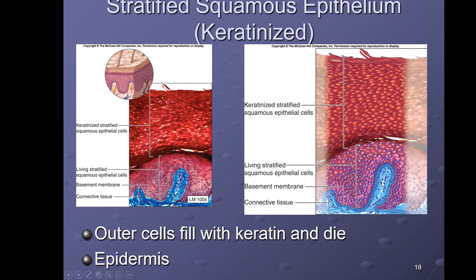To be more specific about location: it is specifically the epidermis of the skin. Your skin has two layers — the epidermis is the stratified squamous epithelium we were just talking about, and the dermis below it is completely different, being connective tissue. So when referring to skin in the context of stratified squamous epithelium, we specifically mean the epidermis.